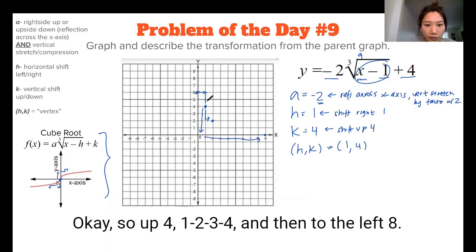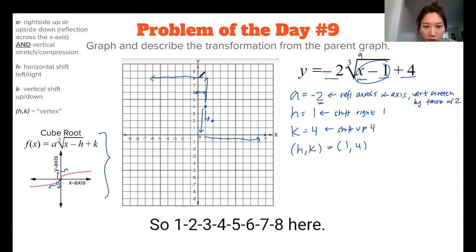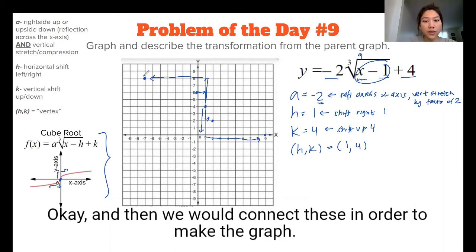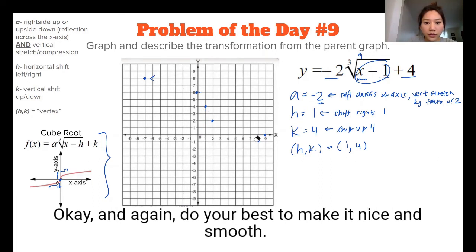So that's 1, 2, 3, 4, and then to the left 8. So 1, 2, 3, 4, 5, 6, 7, 8 here. And then we would connect these in order to make the graph.